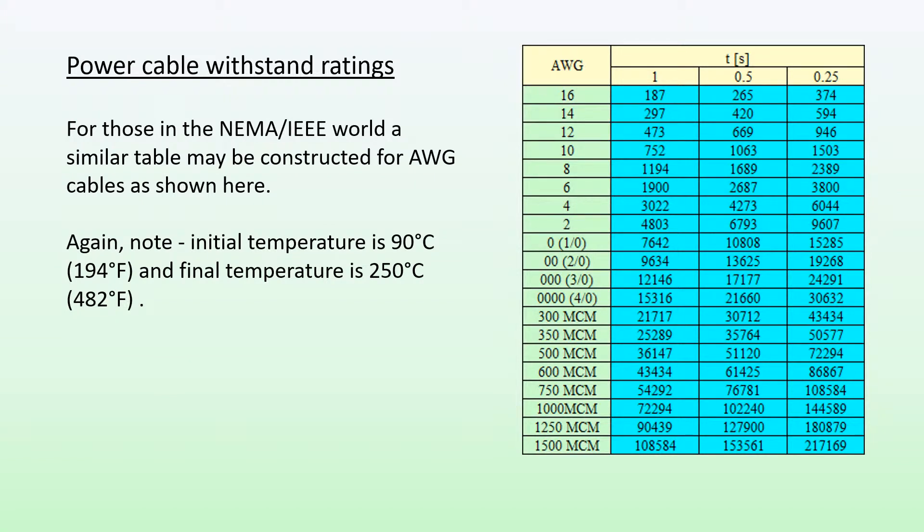For those in the NEMA IEEE world, a similar table may be constructed for AWG cables as shown here. For example, if I have an AWG 2 cable, my 1 second rating is 4803 amps, which goes up to 6793 amps for a 0.5 seconds fault duration. If the fault is only there for 0.25 seconds, the fault current this cable can accommodate is now 9607 amps.